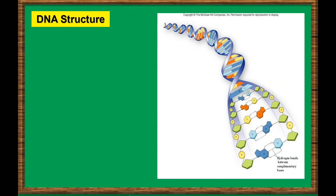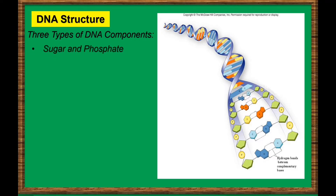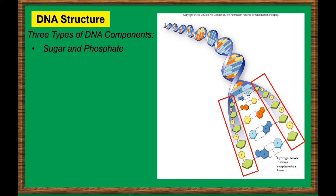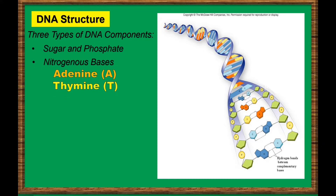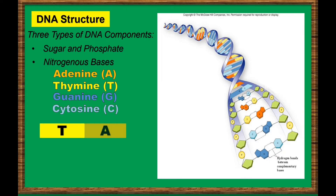There are three types of DNA components. The sides of a DNA molecule are sugar and phosphate molecules. The rungs are pairs of chemicals called nitrogenous bases, or bases for short. There are four types of nitrogenous bases: adenine, thymine, guanine, and cytosine. Always remember that these bases link in a very specific way — thymine is always paired to adenine, while guanine is always paired to cytosine.